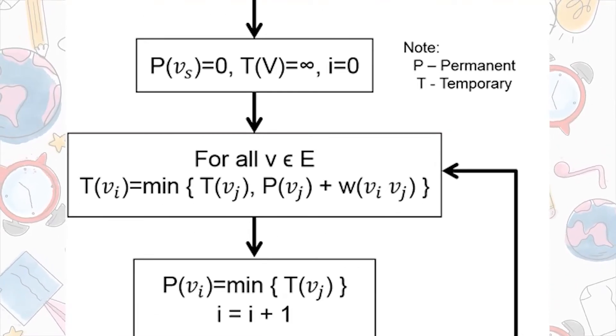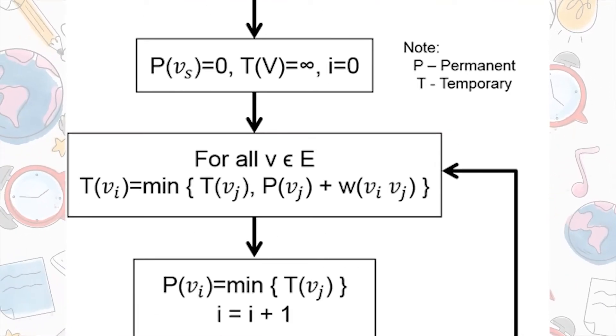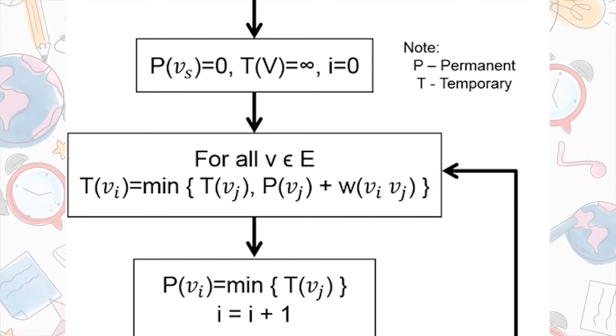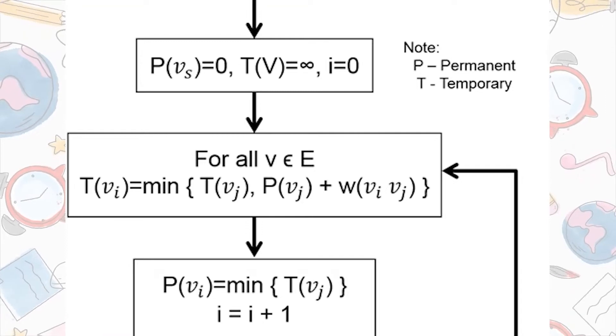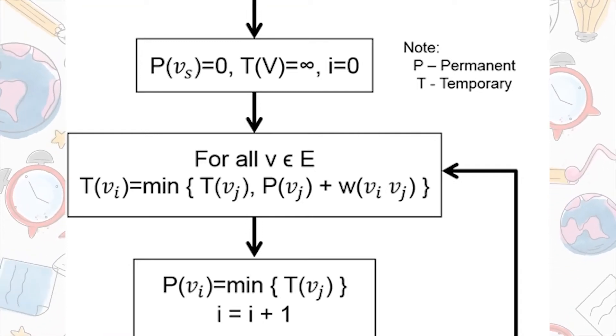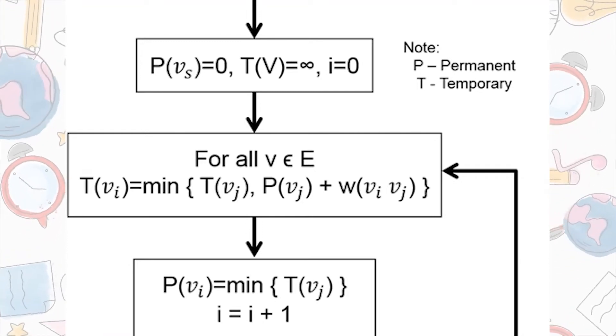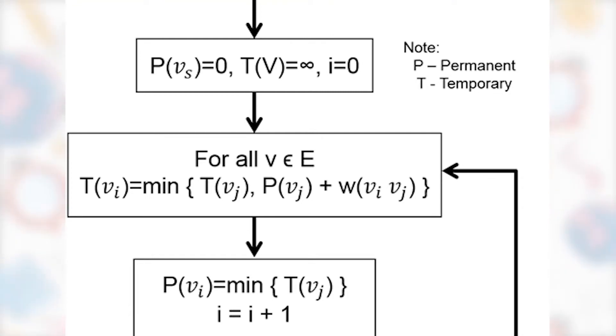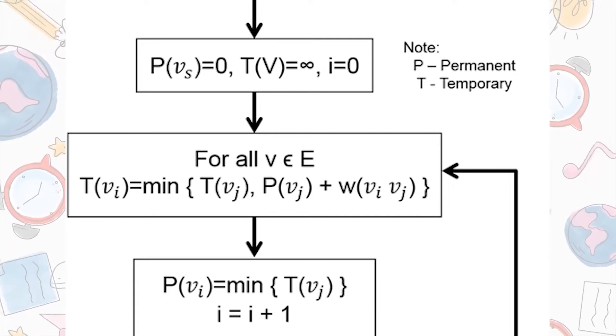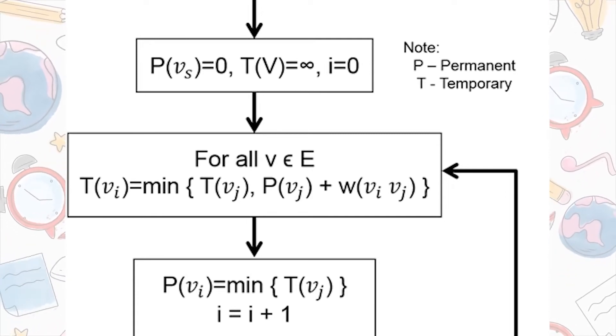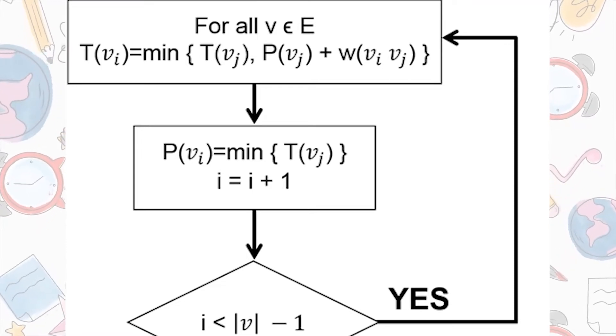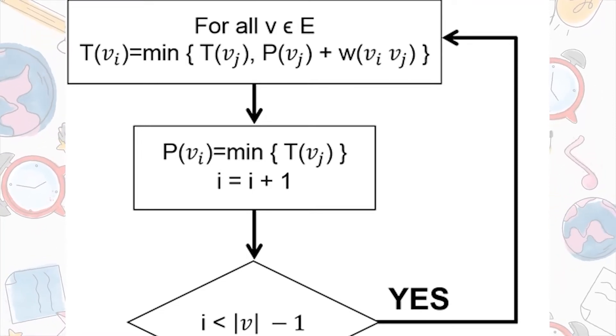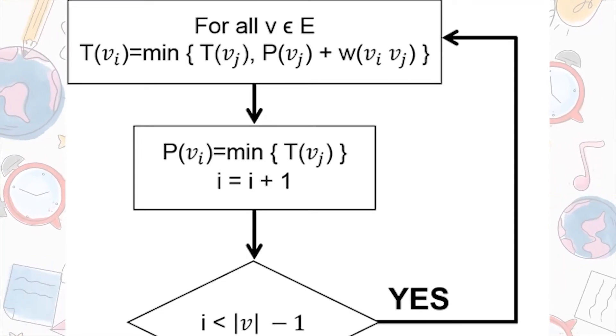Then, we will look for all the adjacent vertices of the initial vertex. For all of the vertices in the graph, we will follow the formula as the temporary value of V sub I equals the minimum value of the ordered pair of temporary value of V sub J and permanent value of V sub J plus weight of the ordered pair of V sub I and V sub J.